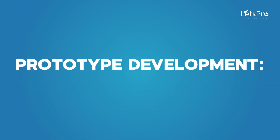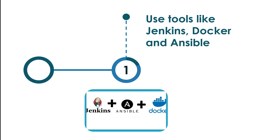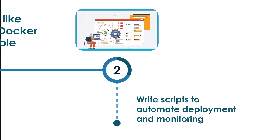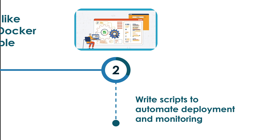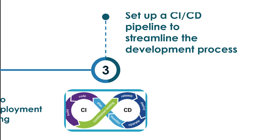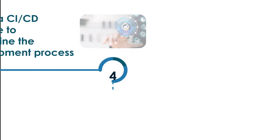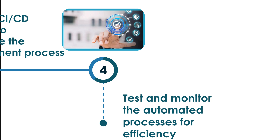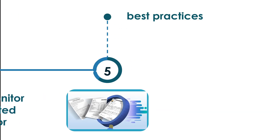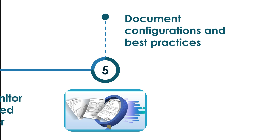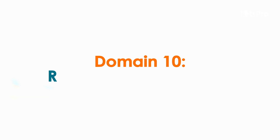For prototype development: use tools like Jenkins, Docker, and Ansible, write scripts to automate deployment and monitoring, set up a CI/CD pipeline to streamline the development process, test and monitor the automated process for efficiency, and document configurations and best practices.